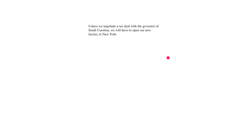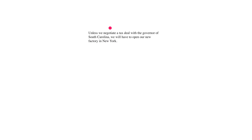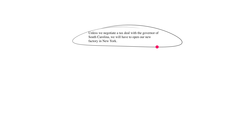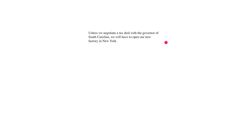So let's take a look at an example, and here I want to appeal to your intuition, and also a tried-and-true mechanical way of translating. The claim is: 'Unless we negotiate a tax deal with the governor of South Carolina, we will have to open our new factory in New York.' Let's state some assumptions about the context. You are the CEO. This is the order handed to you from your board of directors. You sent a chief negotiator to South Carolina to work something out with the governor.